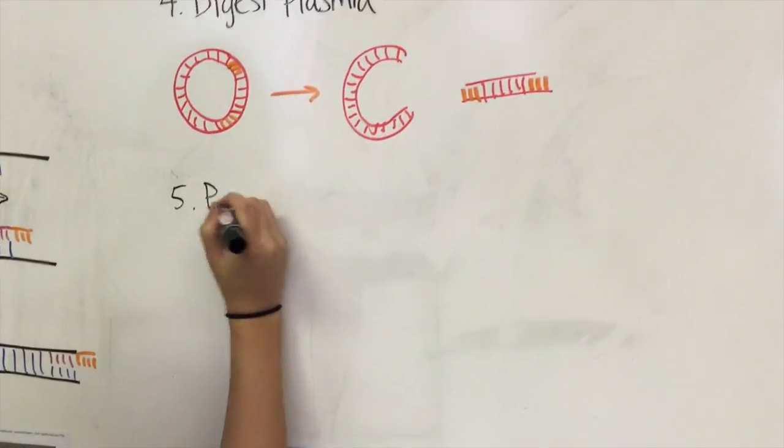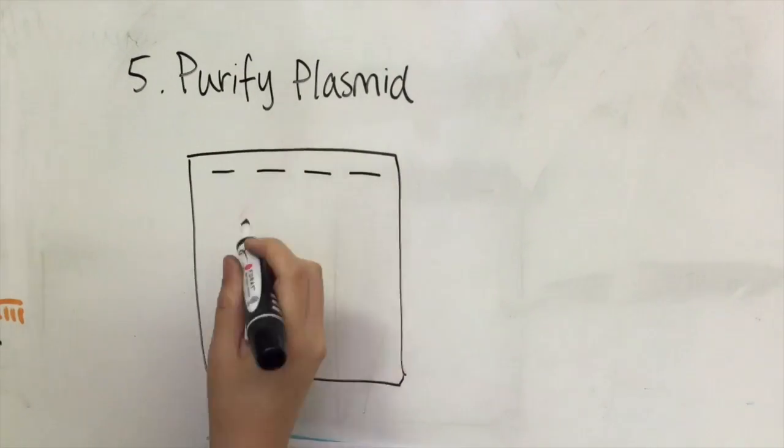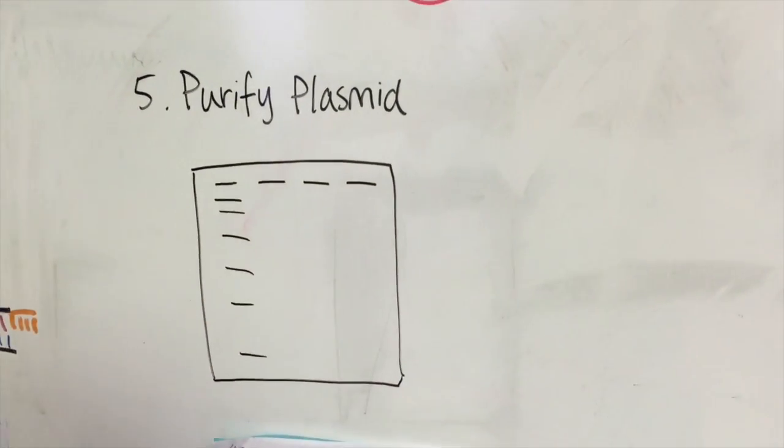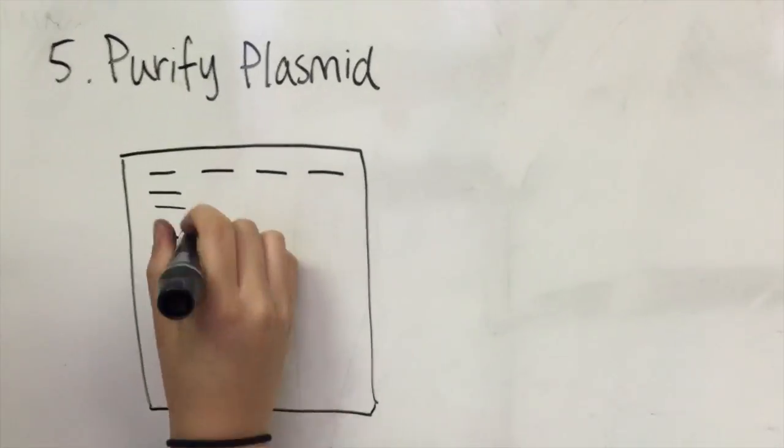The fifth main step is to purify the digested plasmid. Separate out the DNA sample using gel electrophoresis. Then, cut out the section of the gel with the desired portion of the plasmid and use gel filtration to separate out the agarose. The Qiagen gel extraction kit is one you can use.